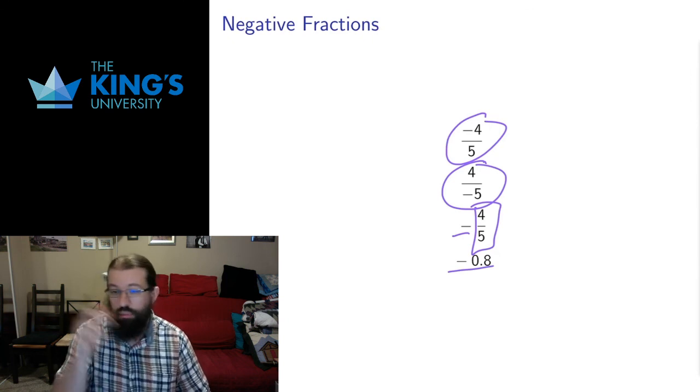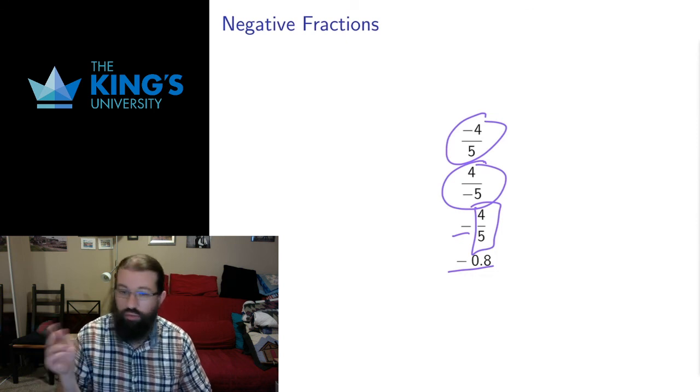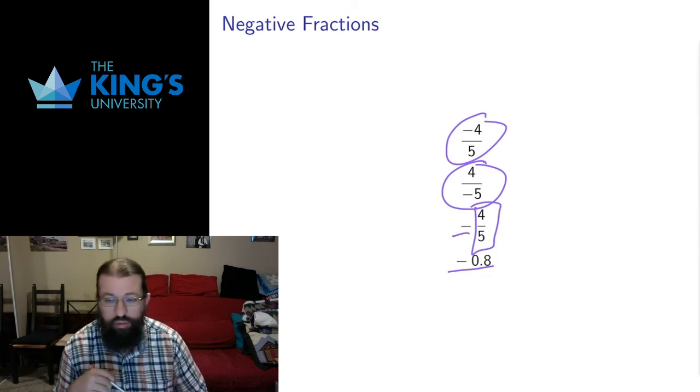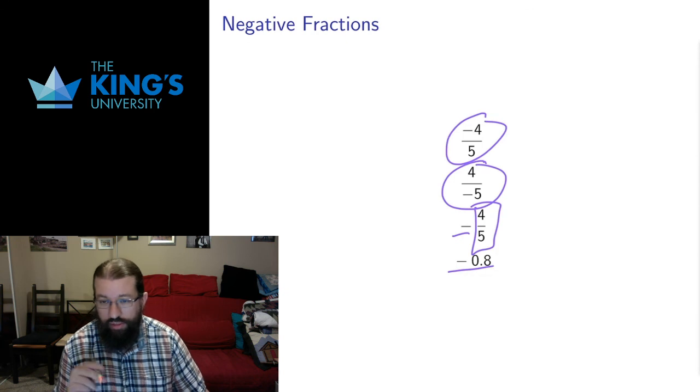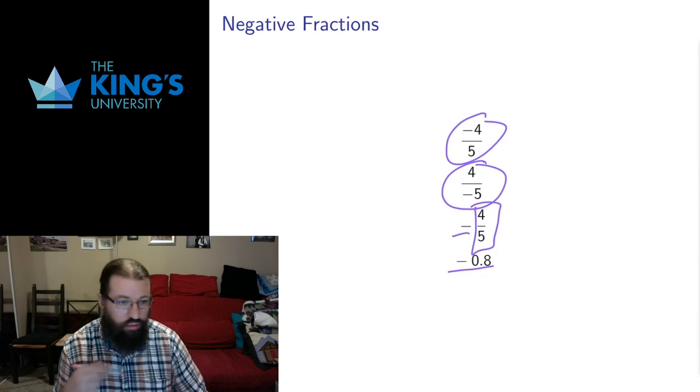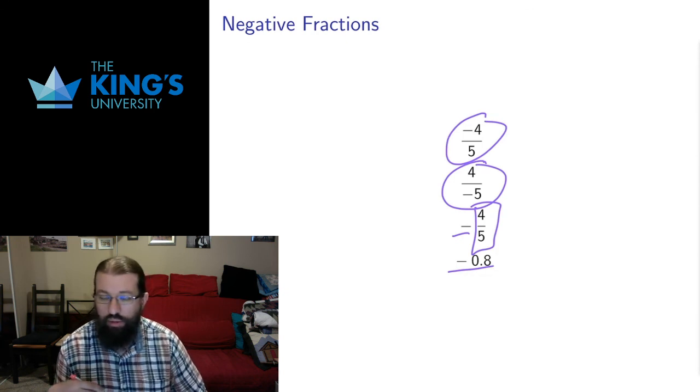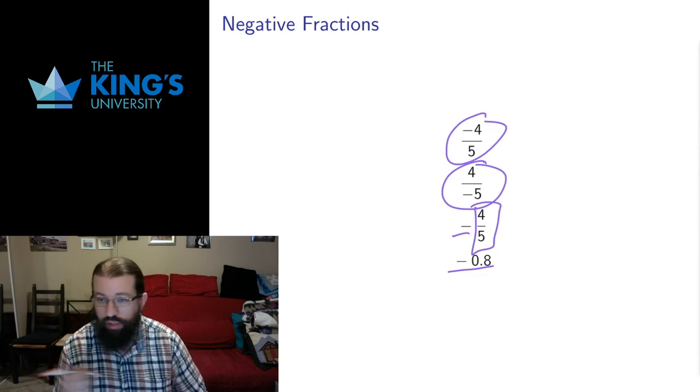This is good because we can move these negatives around. If we have a negative in the denominator or a negative in the numerator, we can pull them out and have them as negatives in front of the whole fraction. That's a really nice tidying up that we can do to keep track of these negative signs. And if we have multiple negative signs, we can cancel them off because two negatives multiplied together cancel each other off.